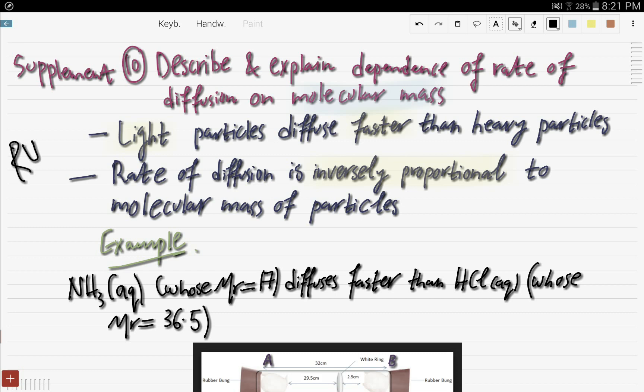So that's a rule. Light particles diffuse faster than heavy particles. And the rate of diffusion is inversely proportional to the molecular mass of the particles. So lighter particles diffuse faster, heavier particles diffuse slower. Pretty easy, right?